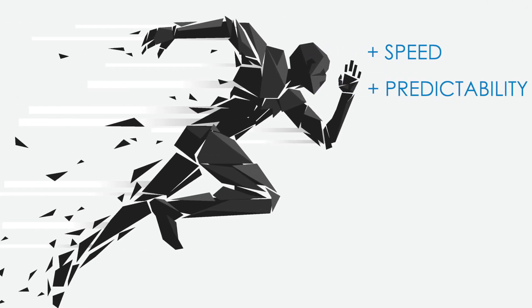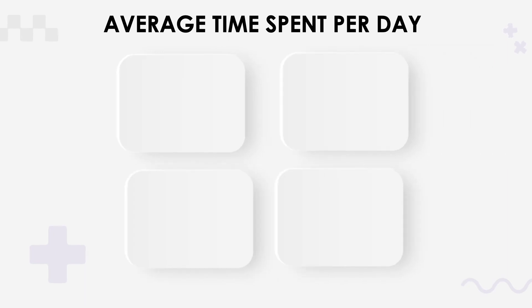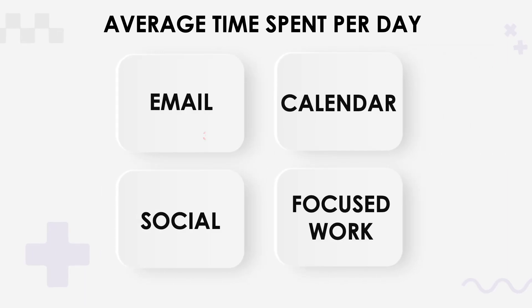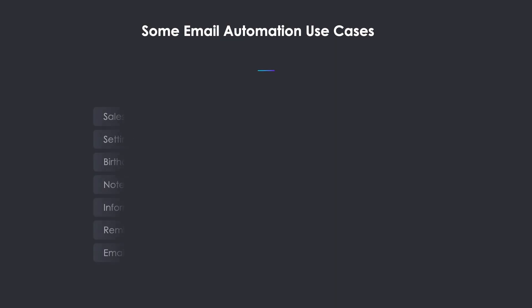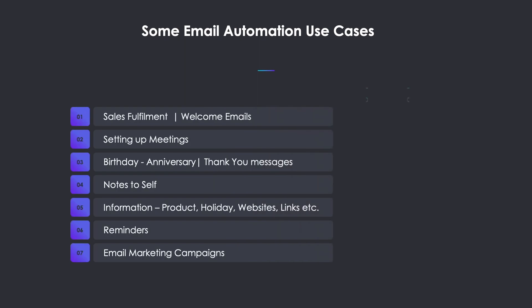Over the last week, I've been experimenting with different API use cases to automate my life and my business. Automation improves the speed and predictability of execution, combined with less process disruption and less stress. I would broadly divide our Notion API world into four categories. Overlaying the time an average person spends in each quadrant made it quite clear that email is a key area to go after. After digging around, I listed seven types of use cases that I could automate.